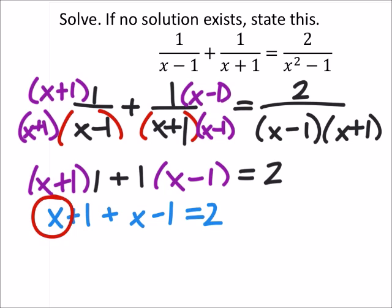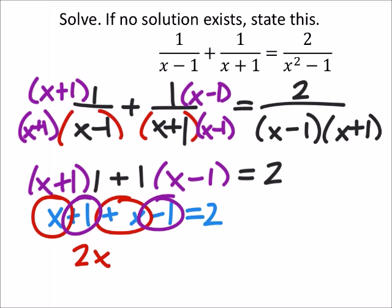So combining like terms, I've got x plus x, which would be 2x, and then I've got 1 minus 1, which would, those cancel out. And this equals 2, so we'll just divide by 2 on both sides, and that shows us that x is 1.